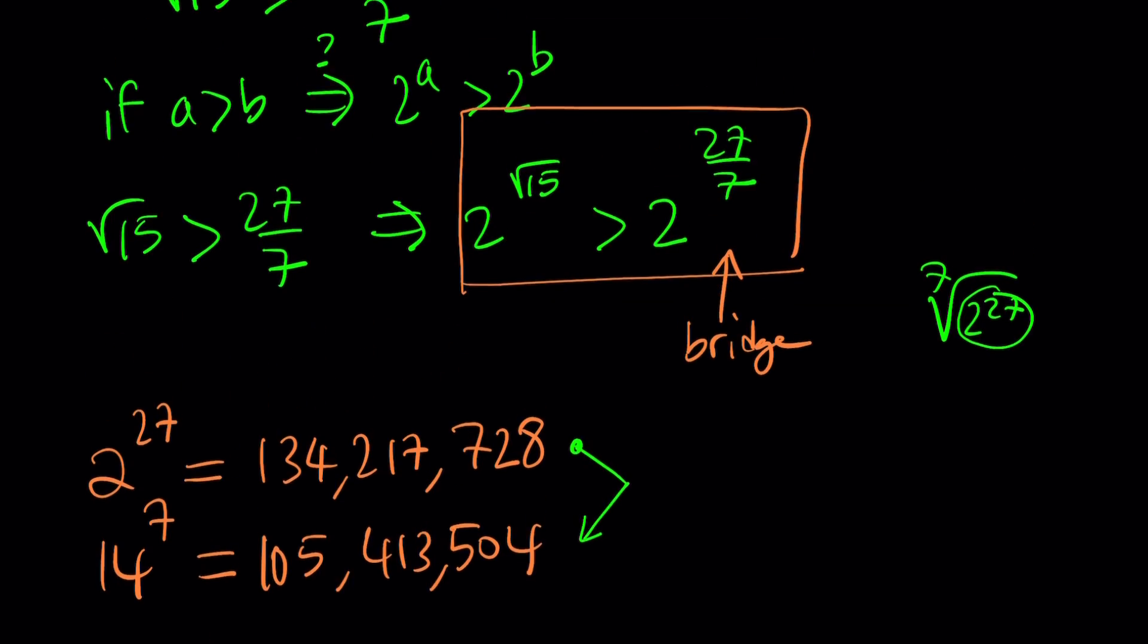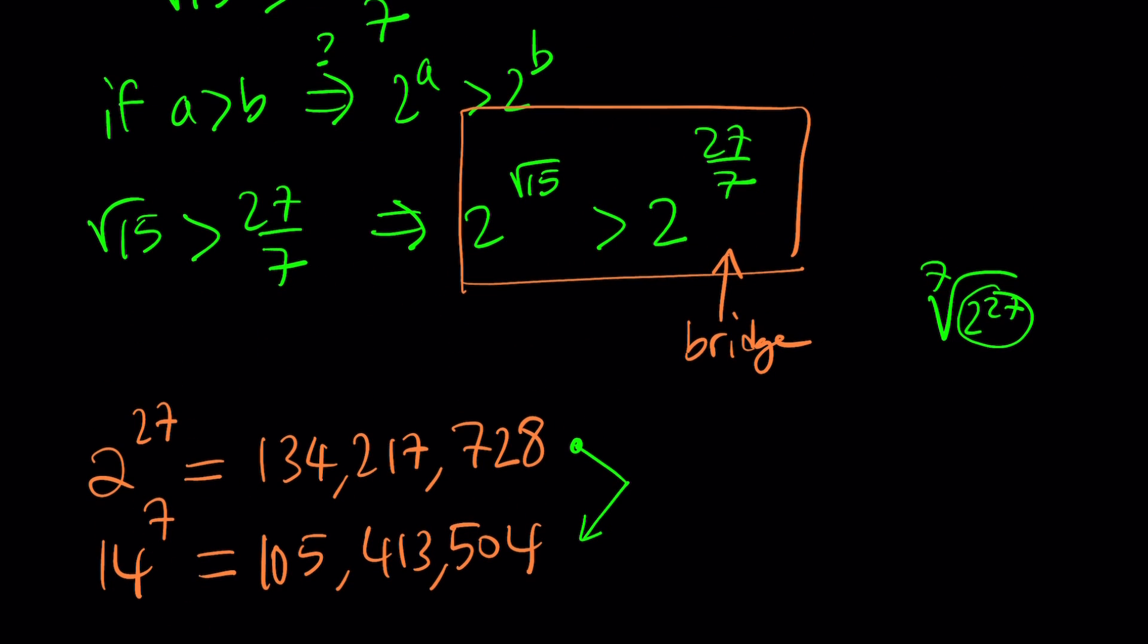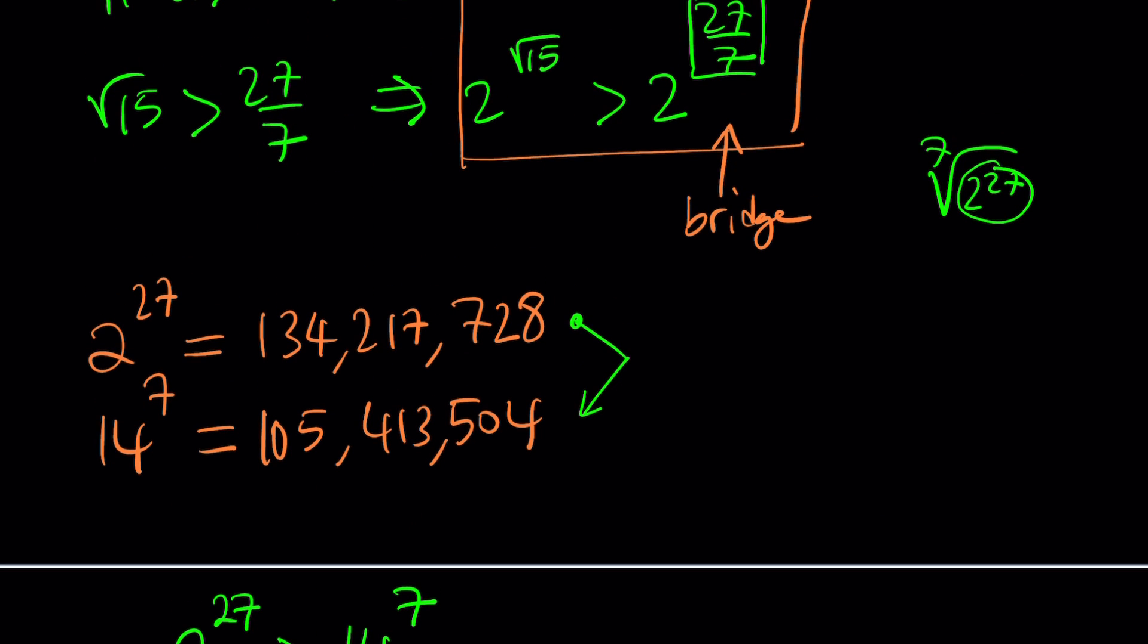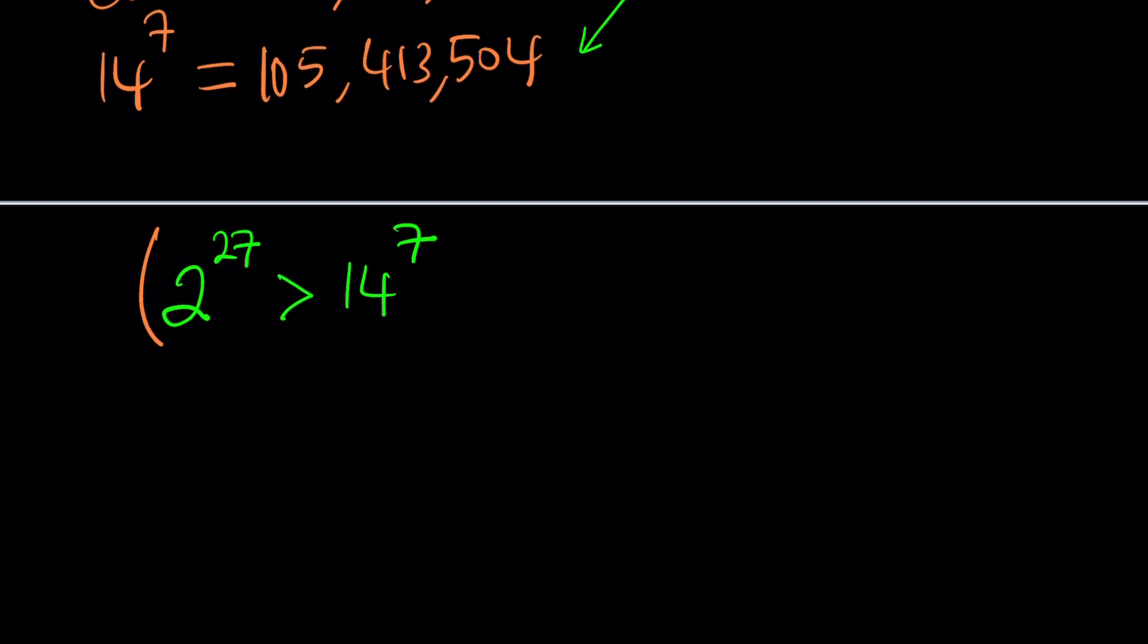But wait a minute, can we go from this to this? Absolutely. All you need is raise both sides to the power 1 over 7. Do you hear what I'm saying? So here's what we're going to do. Because I do need 2 to the power 27 over 7, I'm going to go ahead and raise both sides to the power 1 over 7.